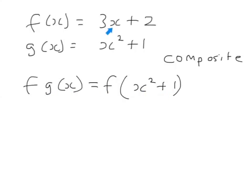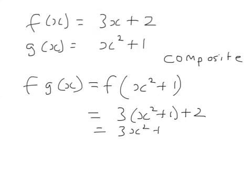What does f do? It gets whatever you start off with, times it by three and add two. So it's going to be three lots of x squared plus one plus two. In other words, it's going to be three x squared plus five.